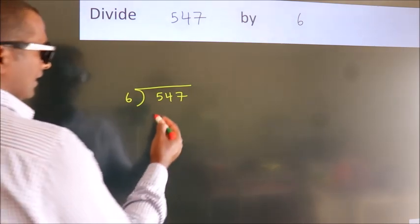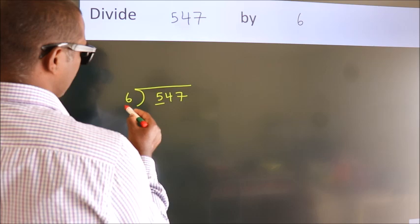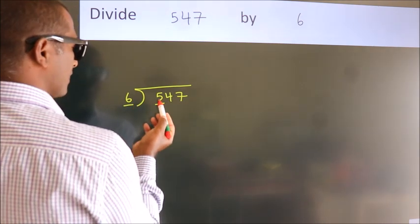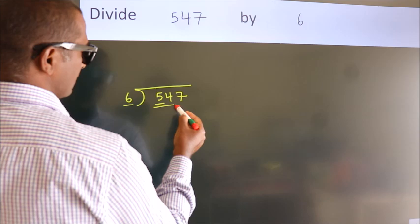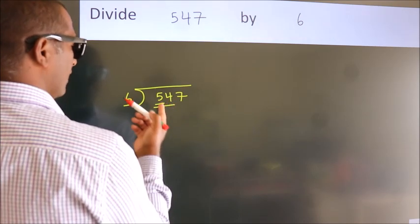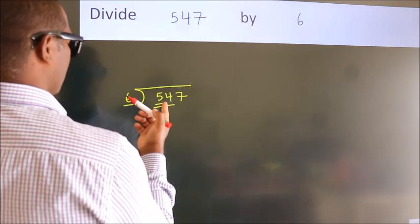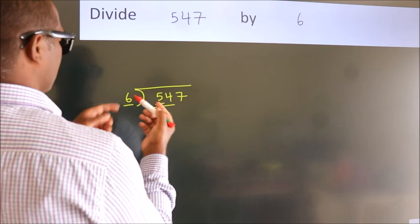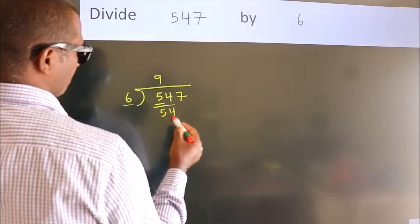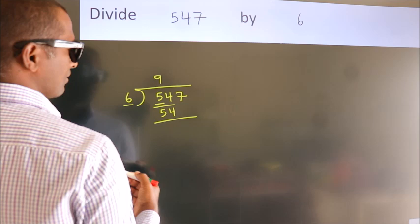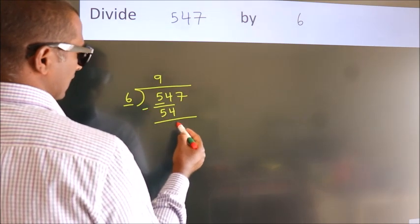Next, here we have 5, here 6. 5 is smaller than 6, so we should take 2 numbers: 54. When do we get 54 in the 6 table? 6 nines, 54. Now we subtract and get 0.